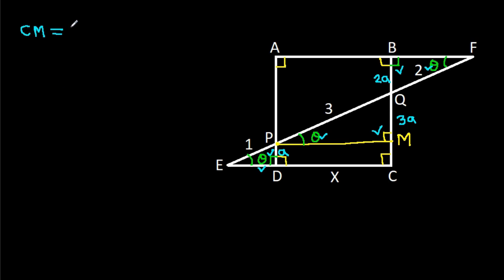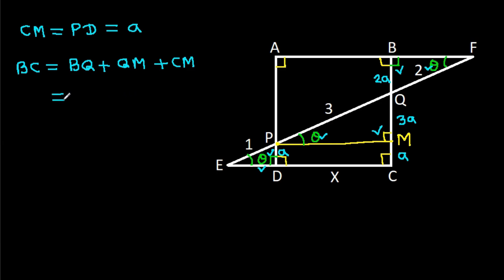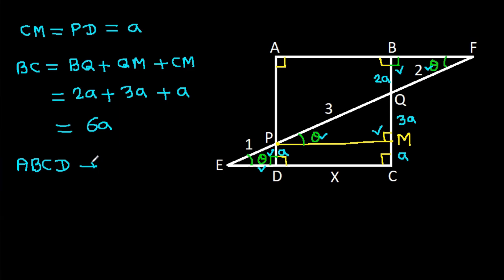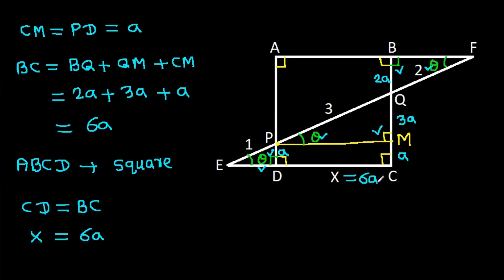Now, CM will be equal to PD, that will be a. So CM is a. And BC equals BQ plus QM plus CM, which is 2a + 3a + a = 6a. We know that ABCD is a square, so CD will be equal to BC. And CD is X, so X equals BC equals 6a. So X is 6a.